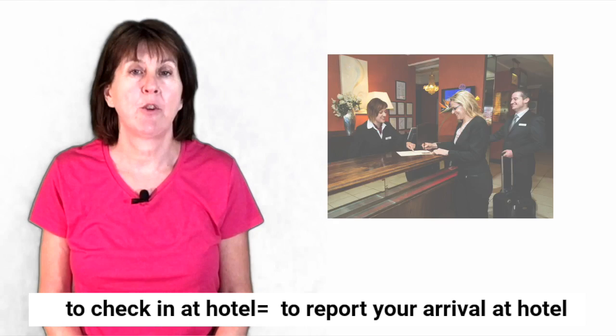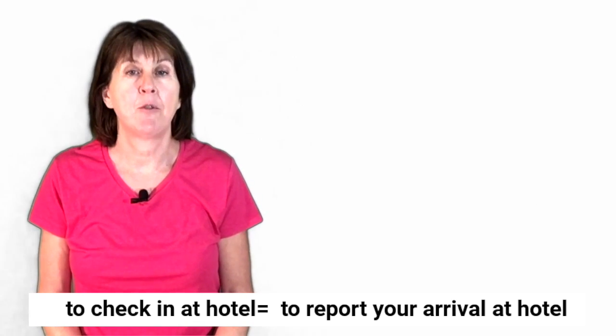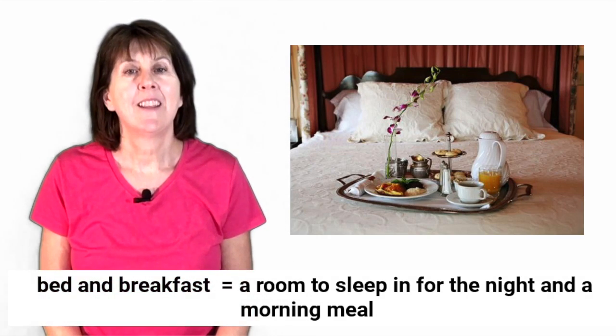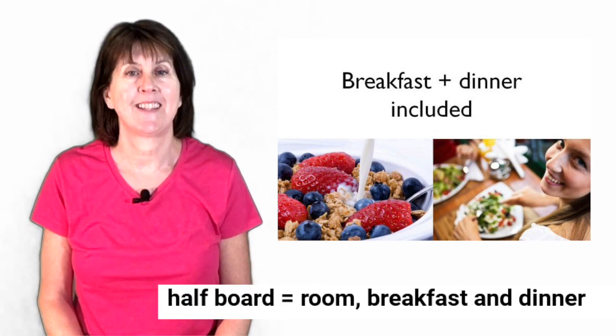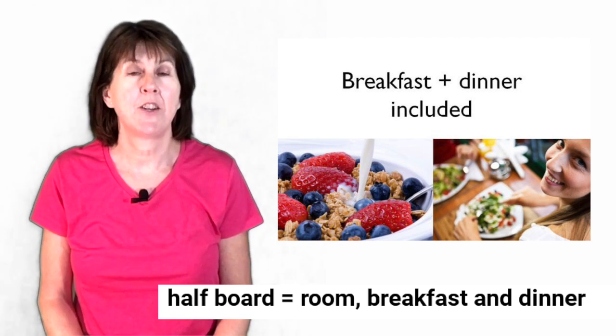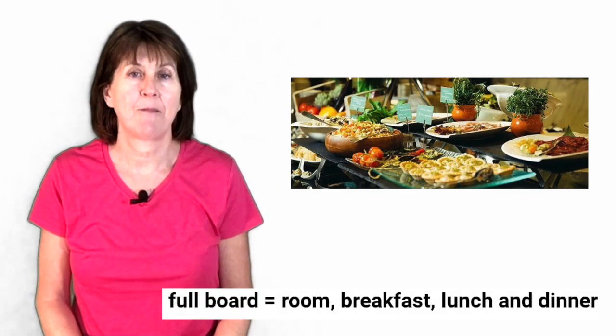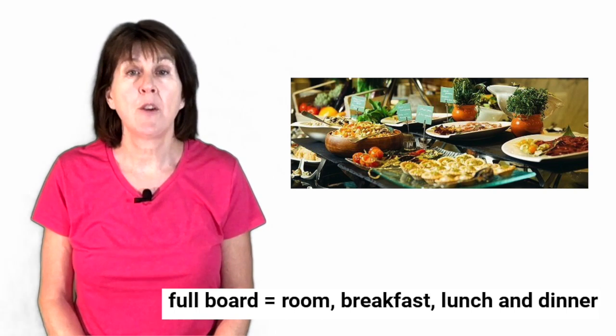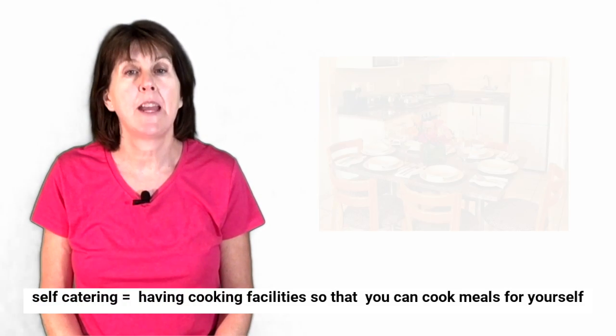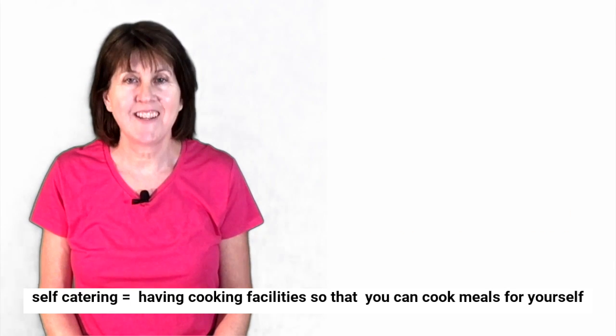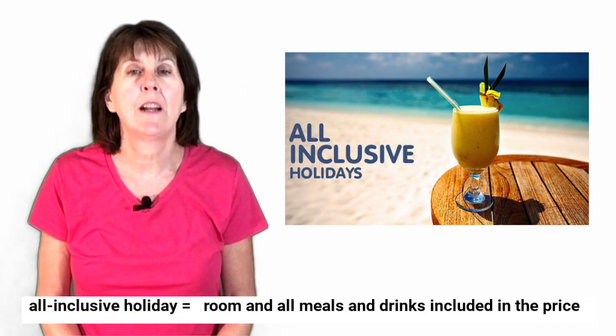At the hotel I had a choice of accommodation. If I'd wanted a bedroom and something to eat in the morning, it's called bed and breakfast, often abbreviated to B&B. If I'd preferred to have breakfast and dinner, I could have stayed on a half-board basis. If I'd wanted breakfast, lunch and dinner, I could have stayed on a full-board basis. They also had rooms with cooking facilities if I'd wanted to prepare my own food and stay on a self-catering basis. Alternatively, if I'd wanted all my meals and drinks included, I could have stayed on an all-inclusive basis.